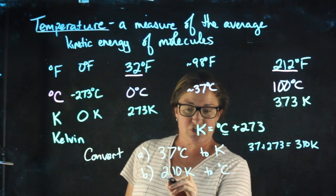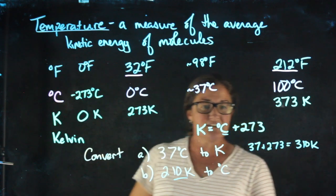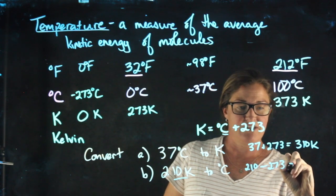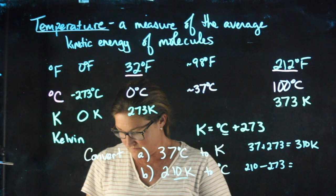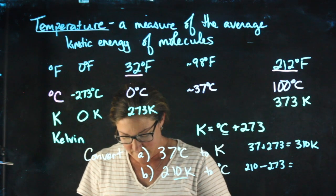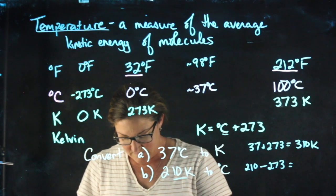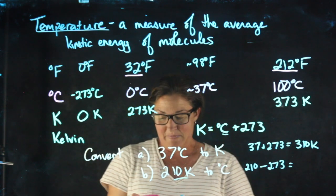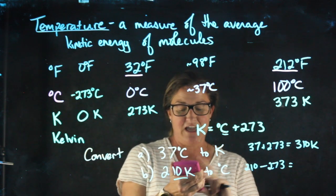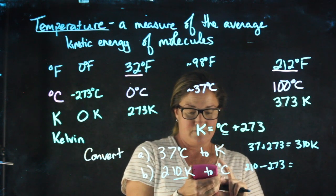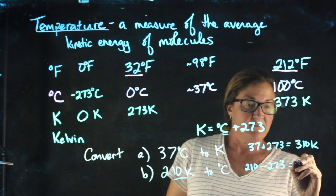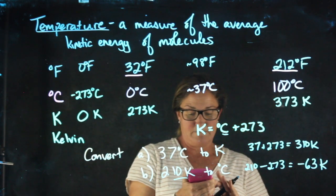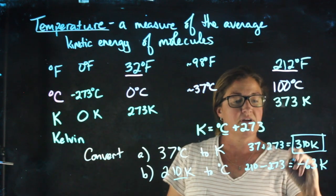If I want to go the other direction and go from 210 Kelvin to degrees Celsius, I'm going to have to subtract 273 instead. So 210 minus 273 gives me negative 63 degrees Celsius. A couple conversions for you to quickly try.